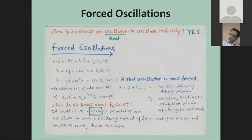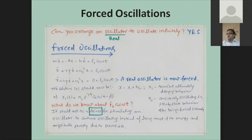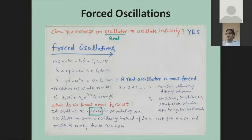Can we arrange an oscillator to oscillate infinitely? The answer is yes — we need to have our system forced. The whole situation now depends on three major parameters: the system doing the forcing, called the driver; the system being forced, called the driven; and the medium, which plays its role by offering constant resistance. These three things overlap with each other.